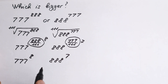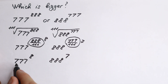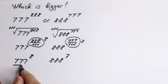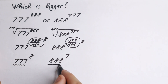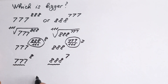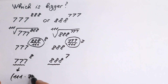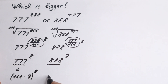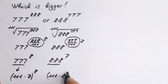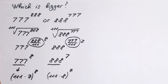What we're going to do next? Take a look closely. The numbers 777 and 888 can be written as 111 times 7 and 111 times 8 respectively. So we now have (111×7) to the power 8 on the left, and (111×8) to the power 7 on the right.